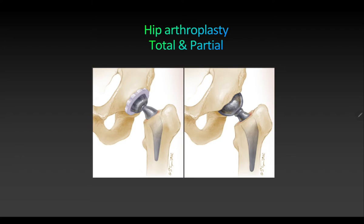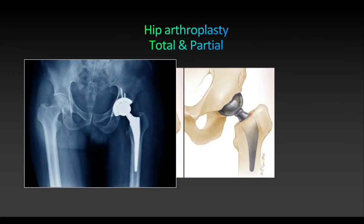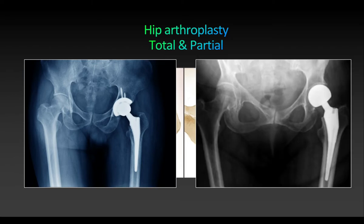Hip arthroplasty — arthro means joint, plasty means repair or replacement — is hip replacement surgery. It can be total or partial. In total hip arthroplasty, the acetabulum is also replaced along with the femoral head and neck. Usually one end is a plastic or polymer and the other is stainless steel. In partial arthroplasty, only the femoral head and neck are replaced.